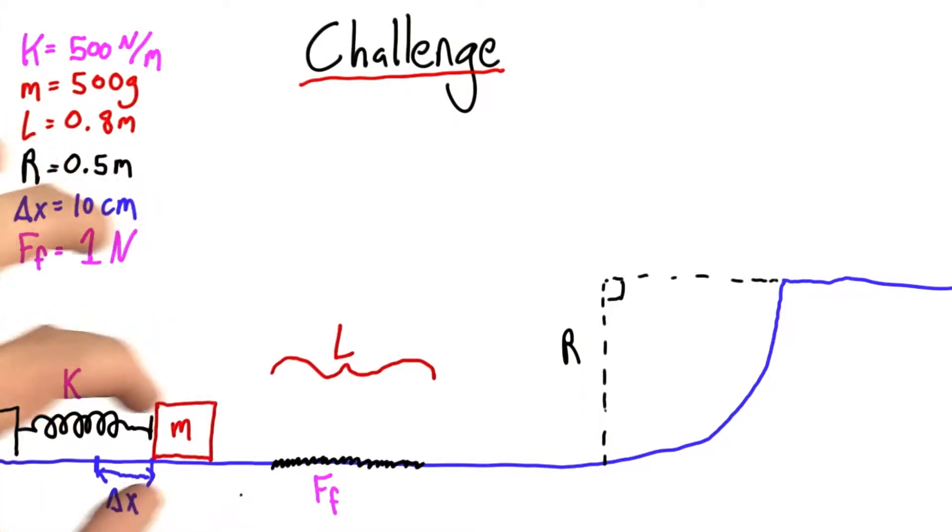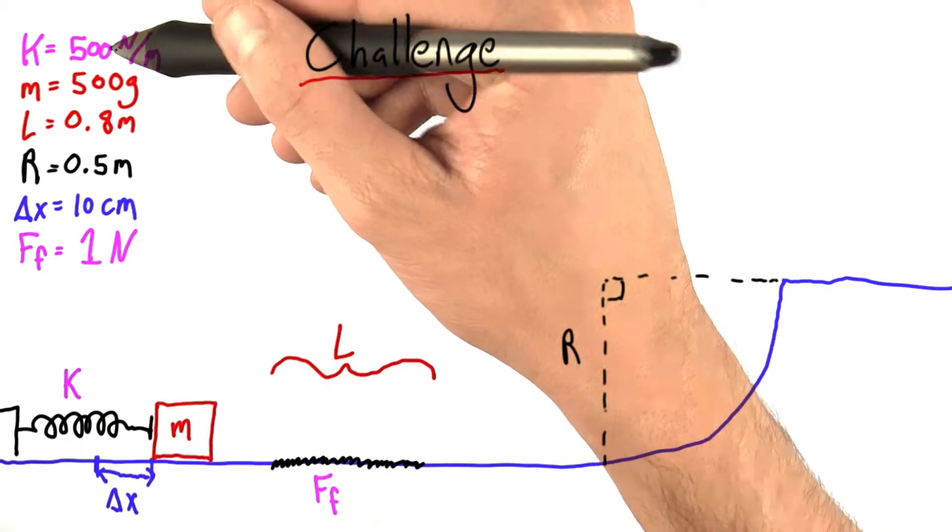Now in this problem, I want to think of a mass and pulling it back against the spring by a distance delta x. I've told you what the spring constant is here.